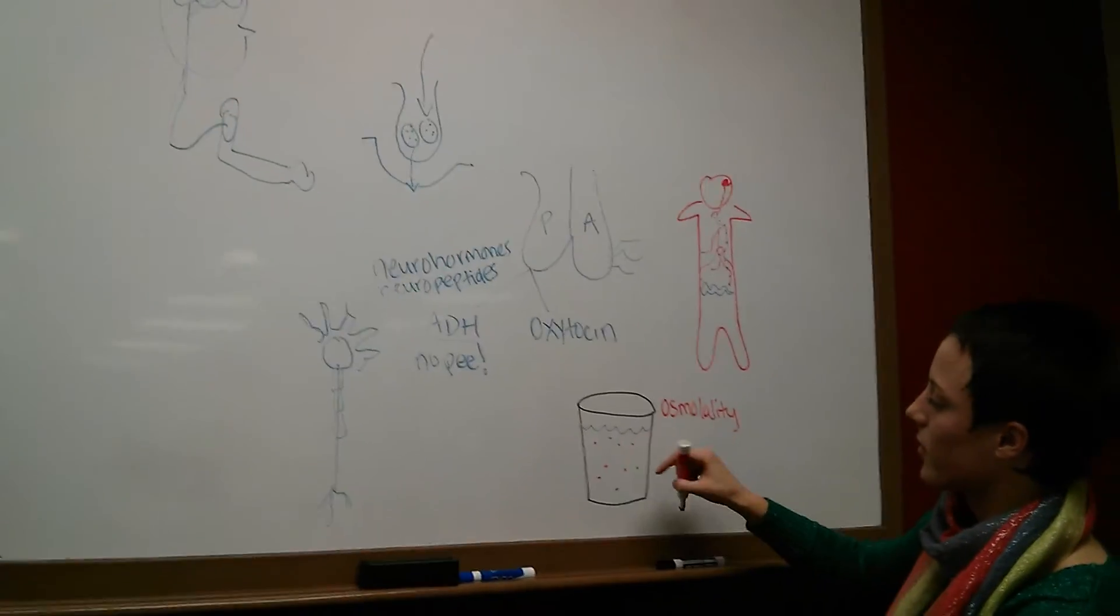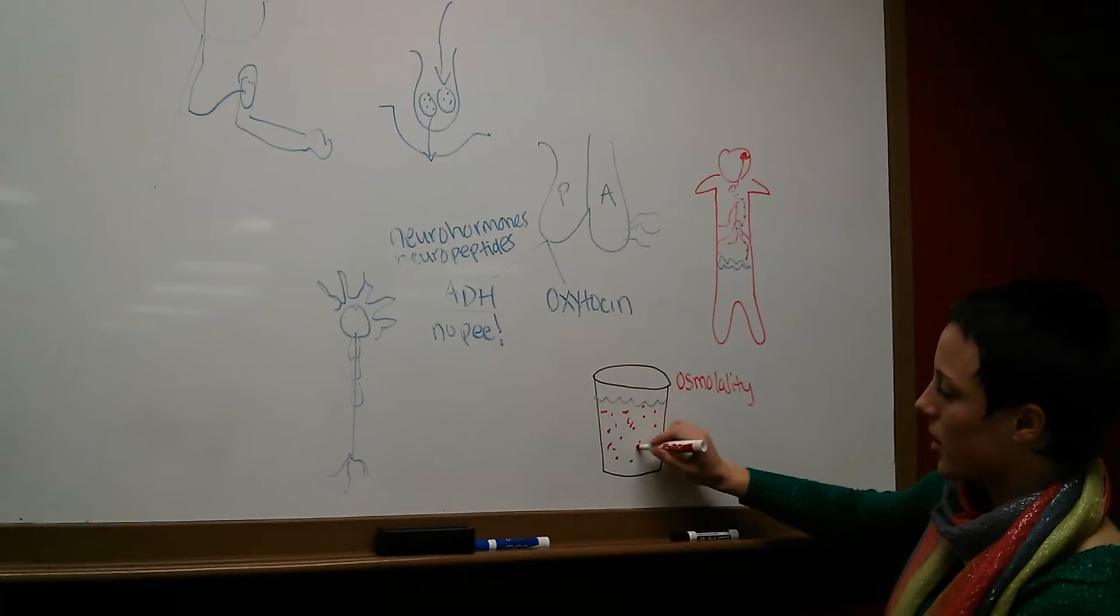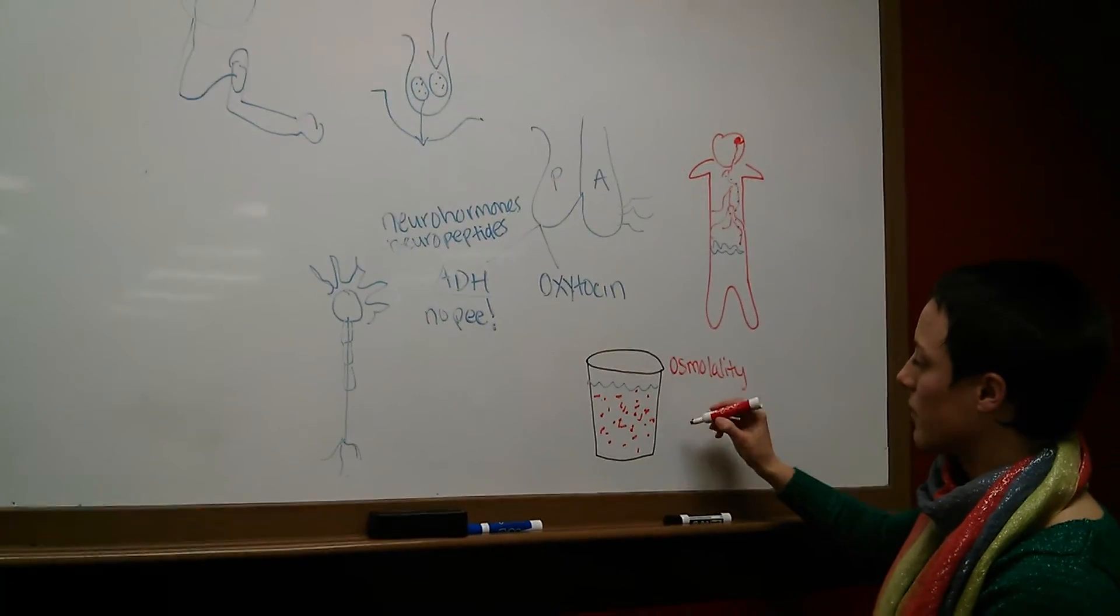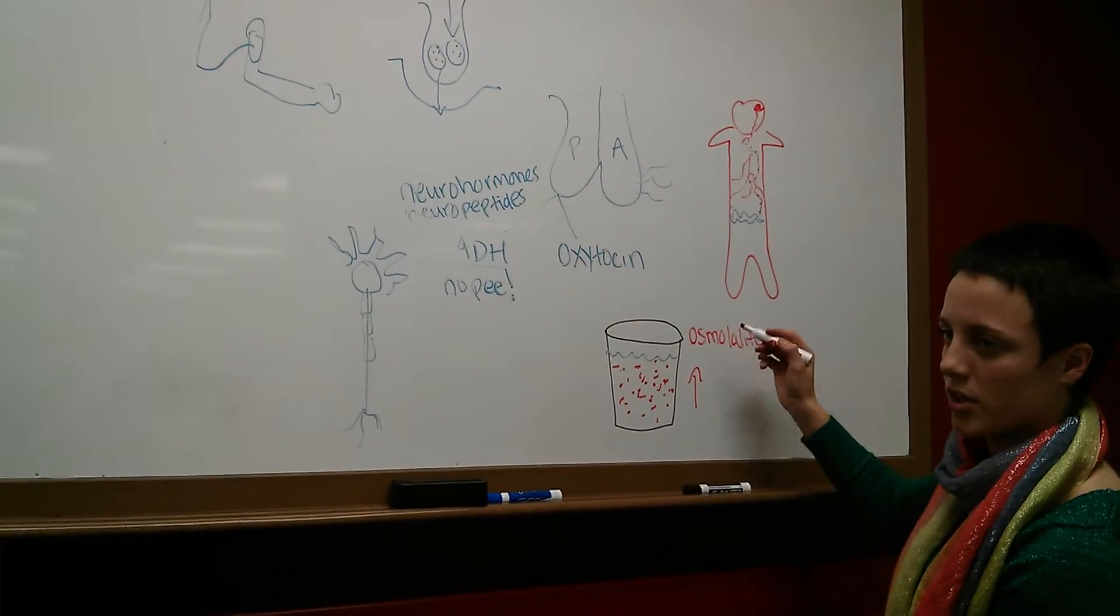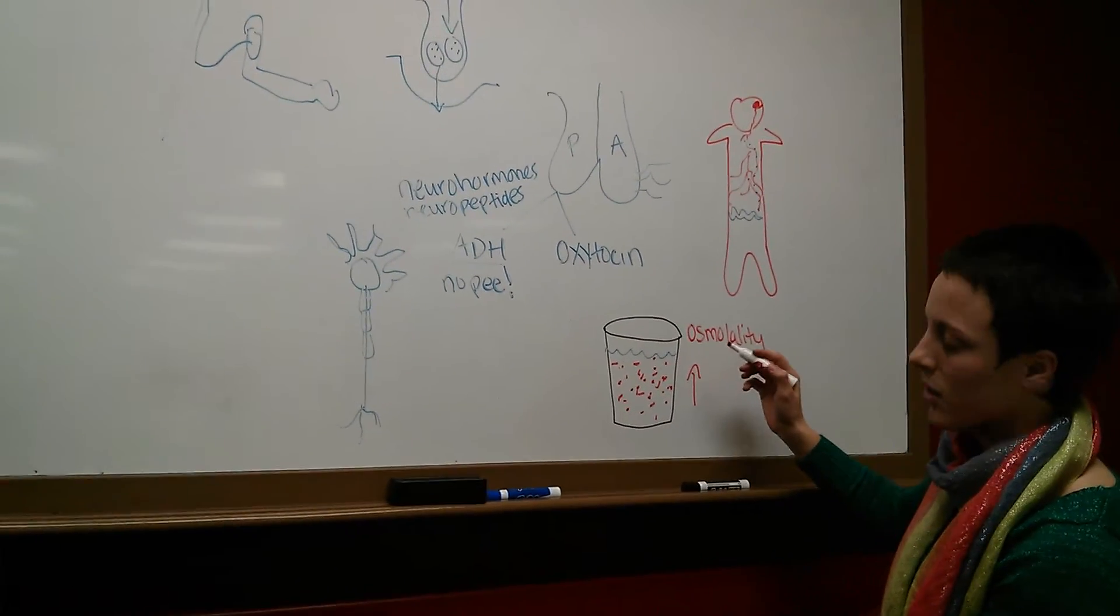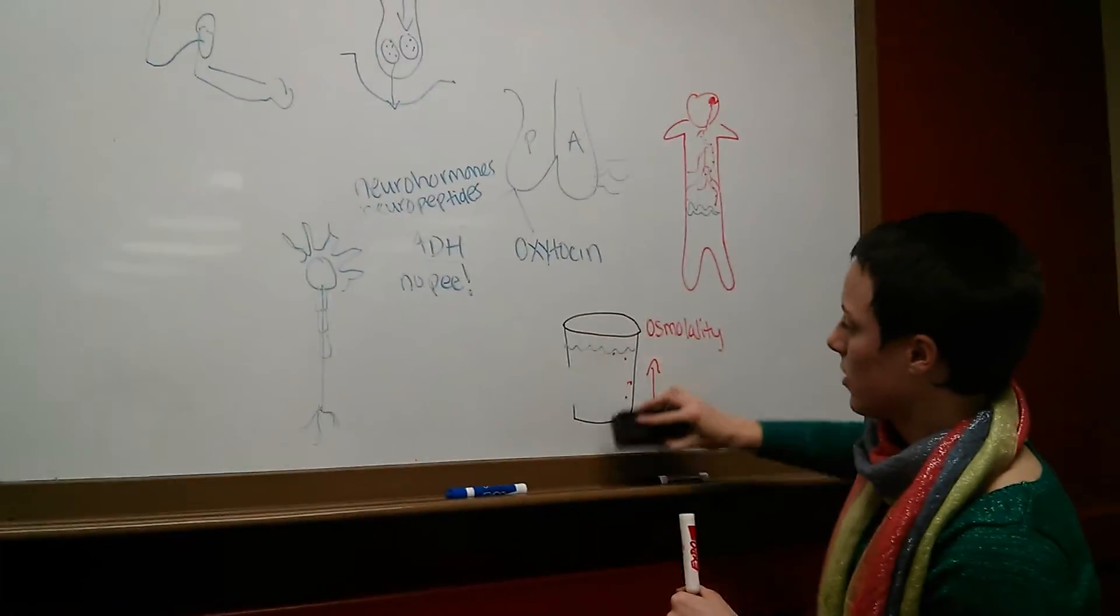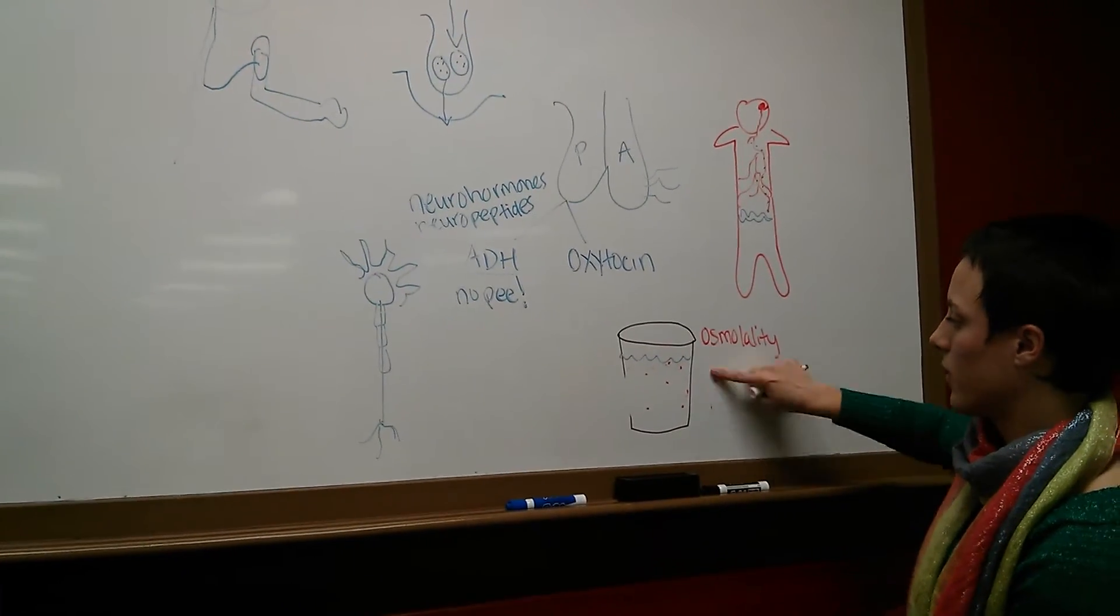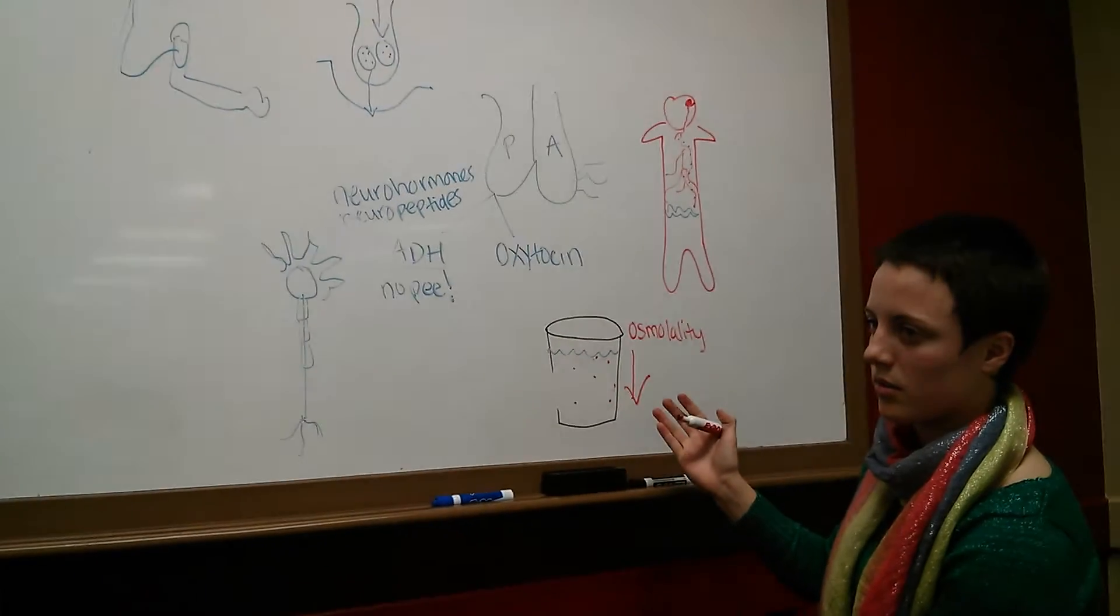So, if you have a lot of toxins in your pee, it's going to be yellowish, right? And so, that means you have a high osmolality, because it's talking about the concentration of toxins. Make sense? So, now, if you have just a few toxins in your pee, then you have a low osmolality, because you have a low amount of toxins. Make sense? Yeah.